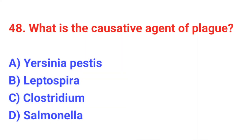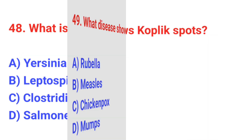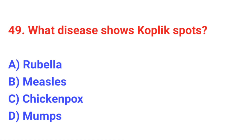Question number 48: What is the causative agent of plague? The correct answer is A: Yersinia pestis. Question number 49: What disease shows Koplik spots? The correct answer is B: Measles.